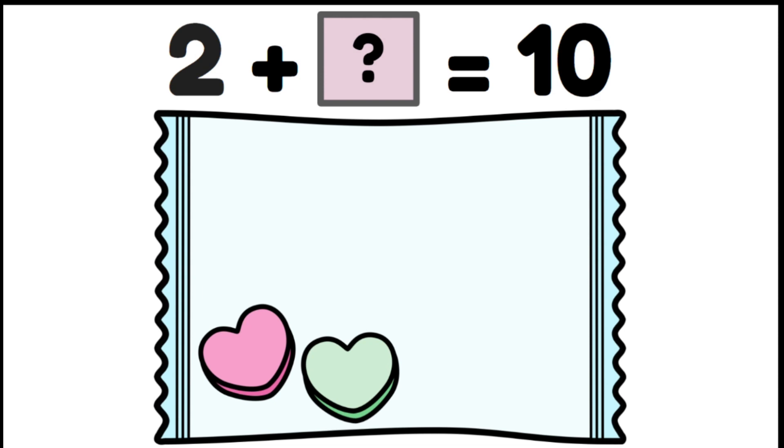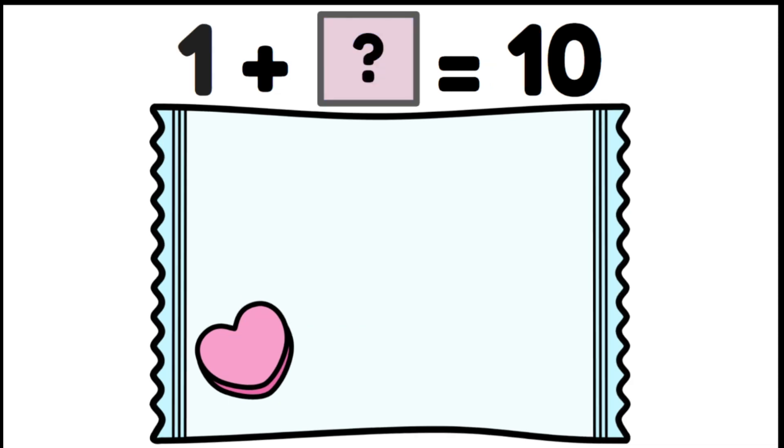2 plus what makes 10? 2 and 8 are friends of 10. Let's see if you can work this out. If I had 1 heart lolly, how many more heart lollies would I need to make 10? 1 and 9 are friends of 10. So I would need 9 more lollies to make 10.